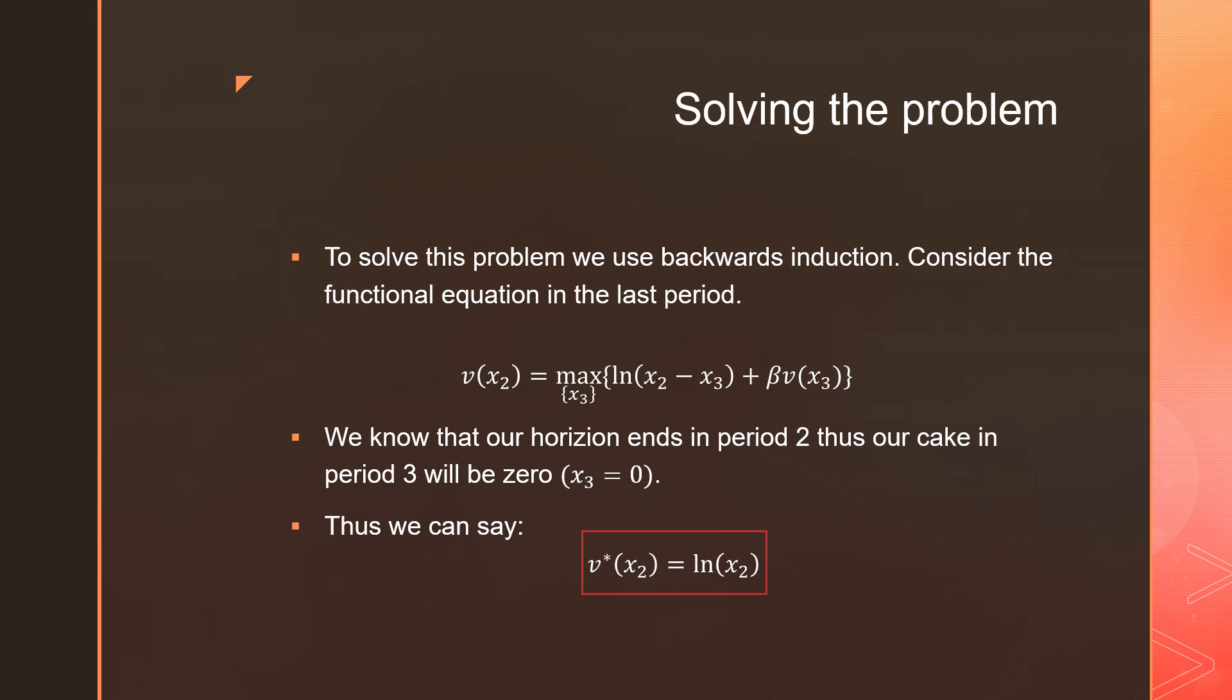Simply put, this is just a matter of working out the algebra and plugging in 0. We can say that our value function at its optimum is equal to ln(X_2).